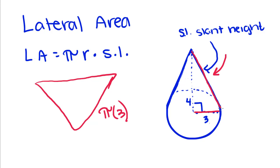It's the height that makes the right triangle with the regular height and the radius. So to do this, we're going to have to use our Pythagorean theorem to find out what our slant height is.